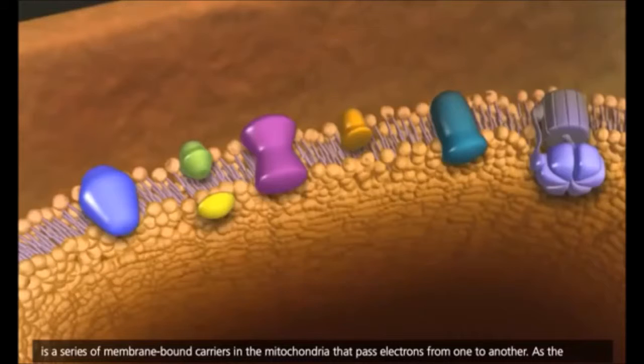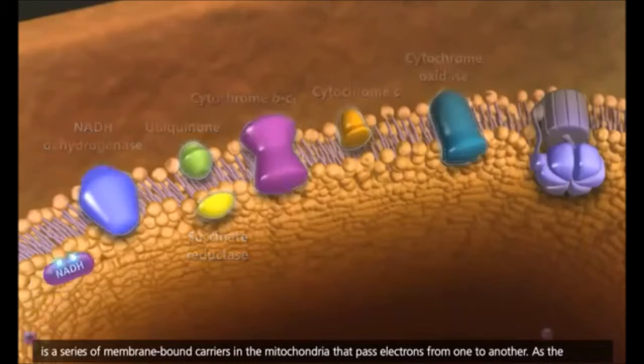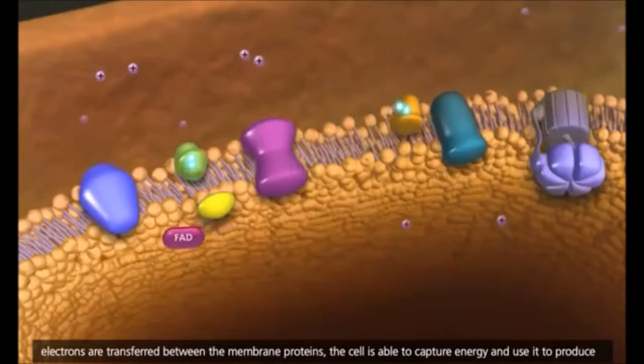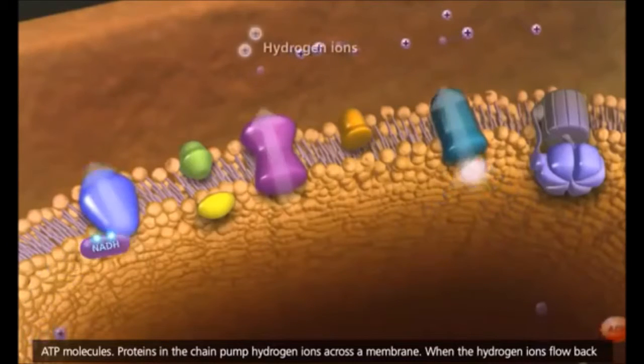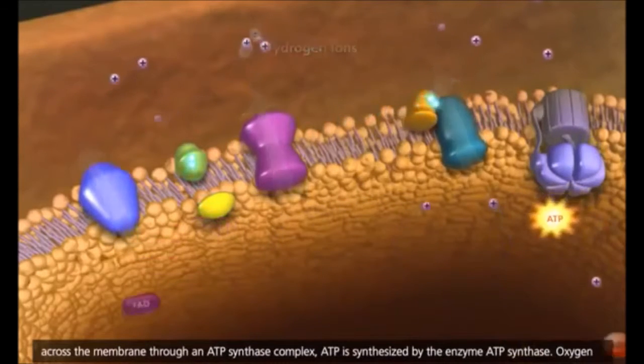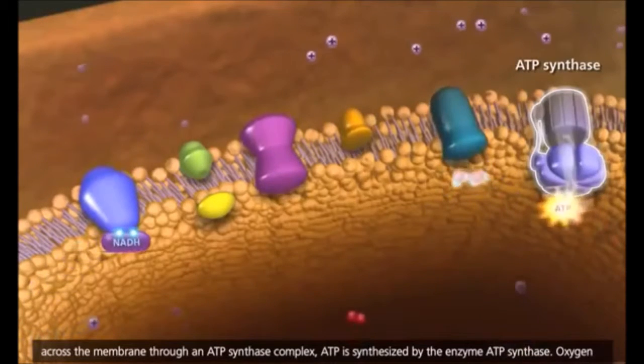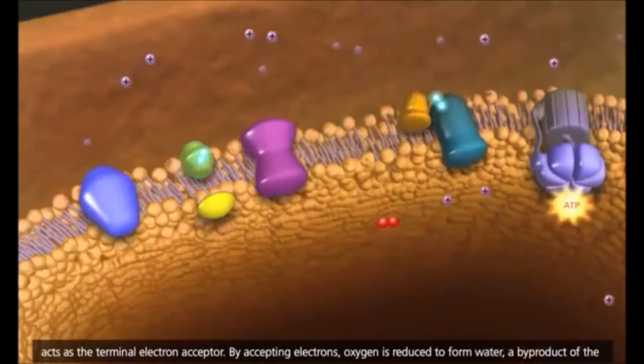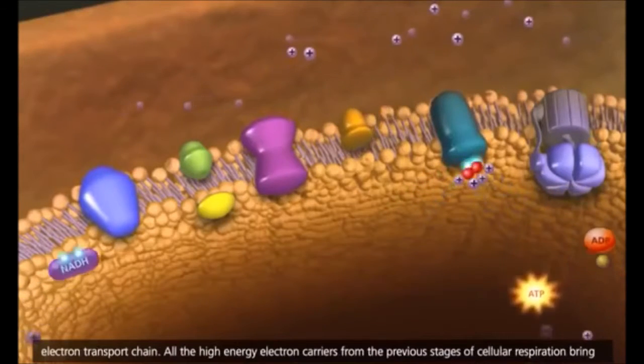The electron transport chain is a series of membrane-bound carriers in the mitochondria that pass electrons from one to another. As the electrons are transferred between the membrane proteins, the cell is able to capture energy and use it to produce ATP molecules. Proteins in the chain pump hydrogen ions across a membrane. When the hydrogen ions flow back across the membrane through an ATP synthase complex, ATP is synthesized by the enzyme ATP synthase. Oxygen acts as the terminal electron acceptor. By accepting electrons, oxygen is reduced to form water, a byproduct of the electron transport chain.